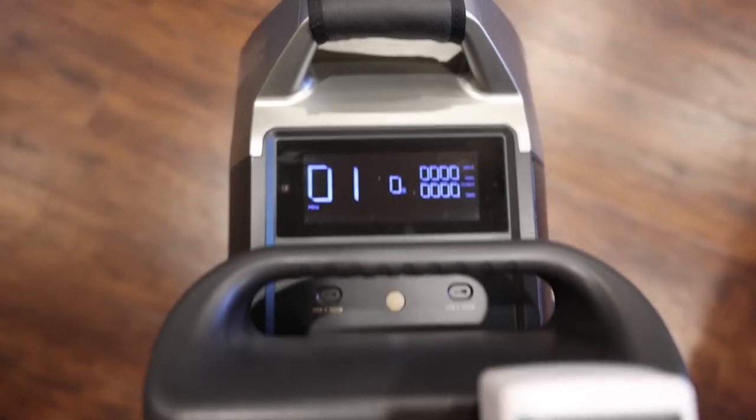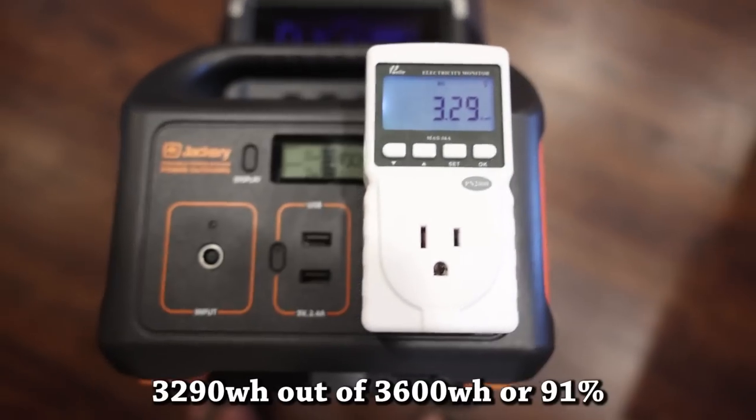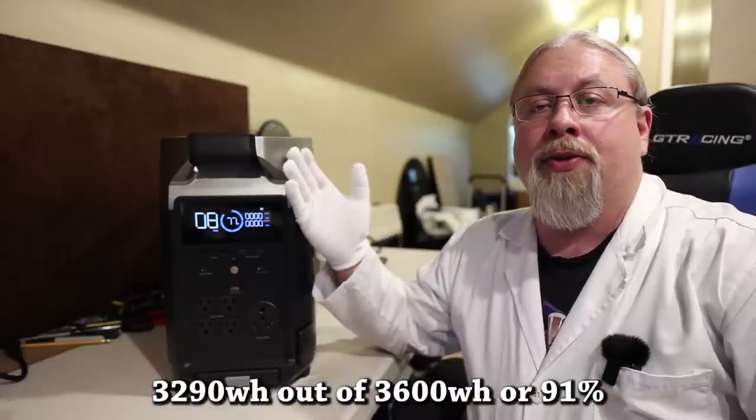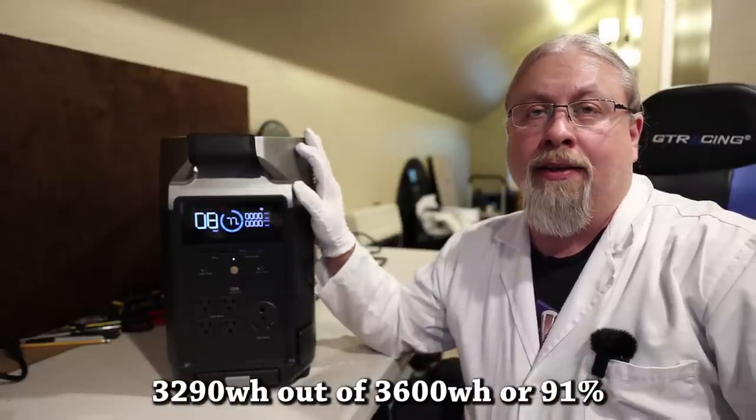Final results of the Delta Pro: I'm using the jacker here to power the meter. 3.29 kilowatt-hours. As you can see, the Delta Pro scored a 91% on the battery capacity test. This is impressive and above average.